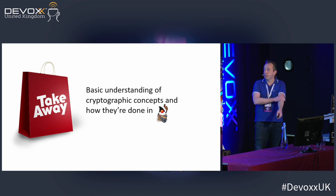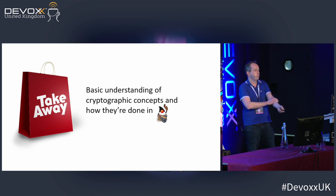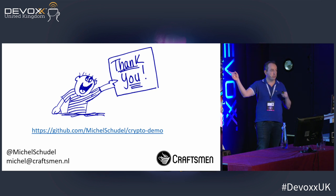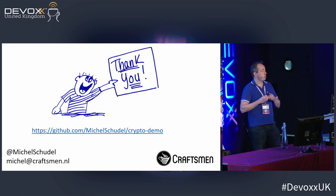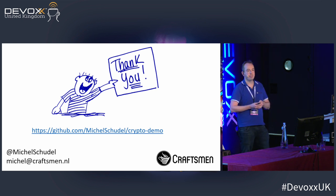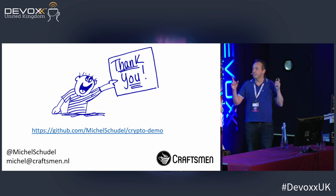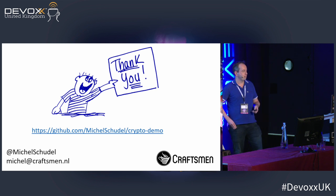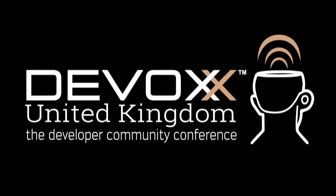My original plan was a takeaway of a basic understanding of cryptographic concepts and how they're done in Java. I hope I succeeded at that. Thank you very much. If you want to play around with examples, you can use this GitHub project — all the examples are in there, including more examples like keystores and Bitcoin blockchain mining. We actually have eight minutes left, so any questions? If you have any questions or think of any afterwards, please feel free to come up and ask. Thank you very much for attending this talk and enjoy the rest of the conference.